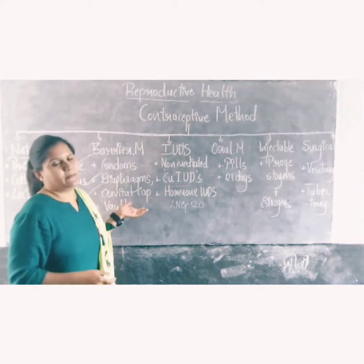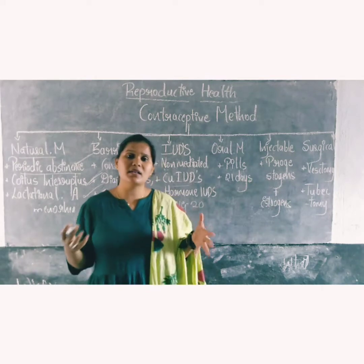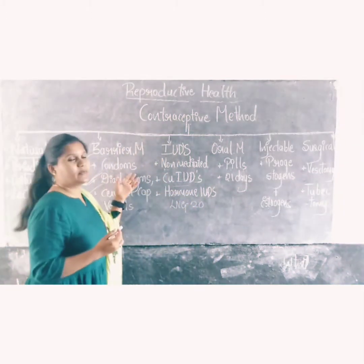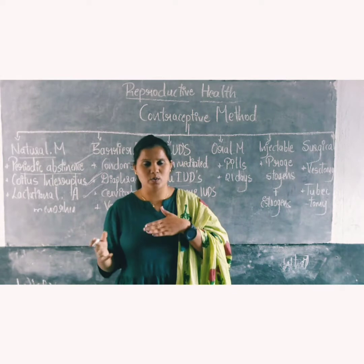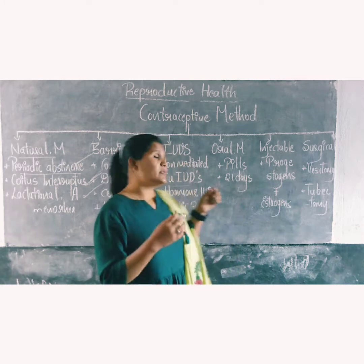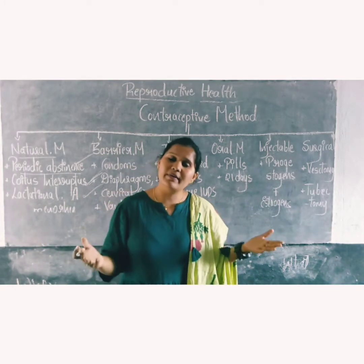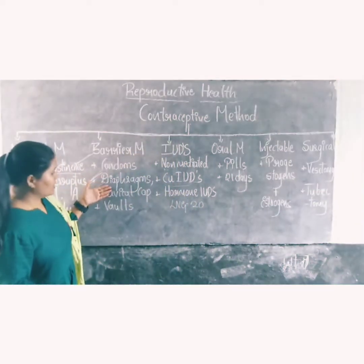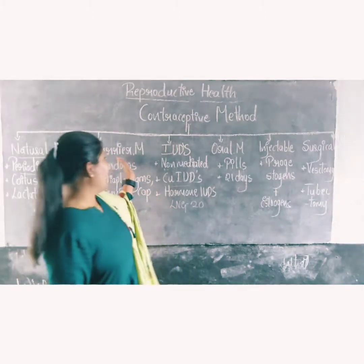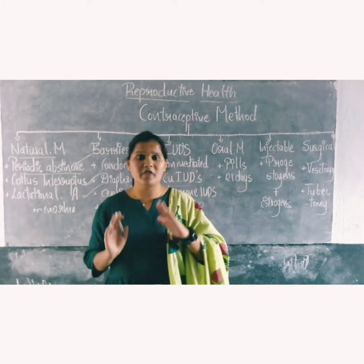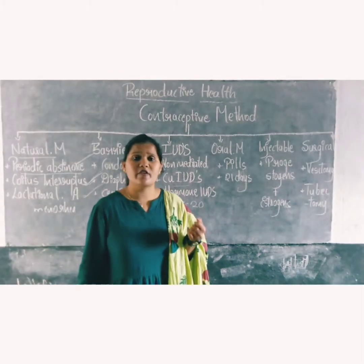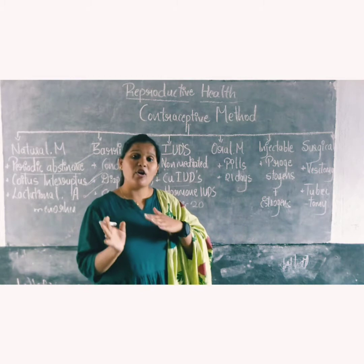Coming to the barrier method — barrier methods act as a barrier between the meeting of the male and female gametes. For example, condoms, which are used by both males and females, are thin sheets made of rubber latex used to prevent pregnancy. Diaphragms, cervical caps, and vaults are also barrier devices used by females, placed to cover the uterus or cervix to stop the entry of sperms.